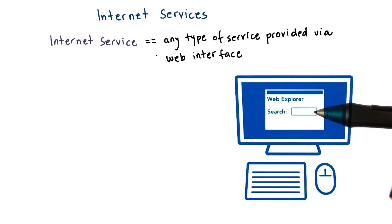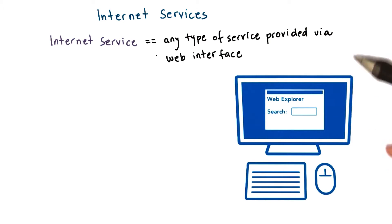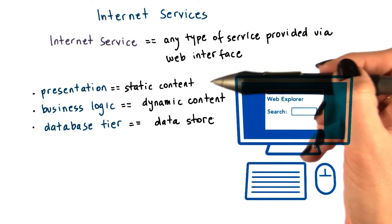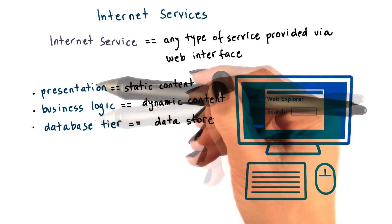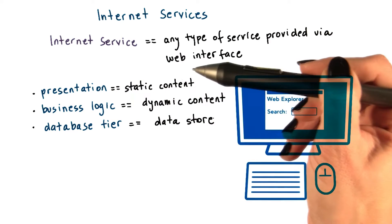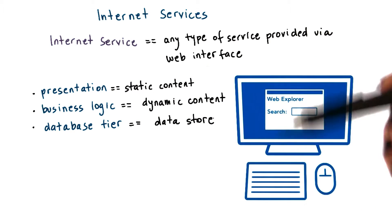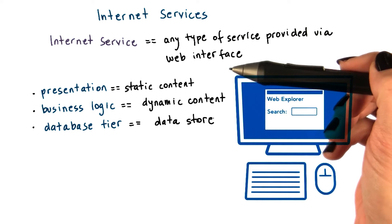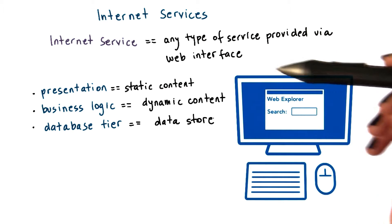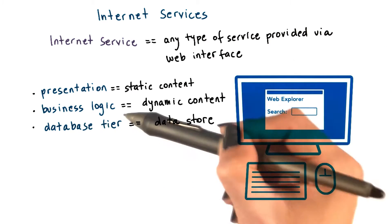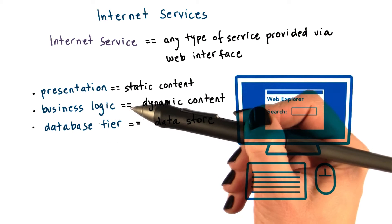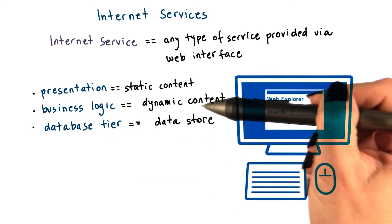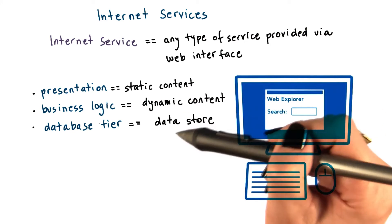The common way in which these services are used is end users send web requests via web browsers and then receive a response. Most commonly, these types of services are decomposed into three components. A presentation component that interfaces with the end users, typically responsible for static content related to the web page layout. A business logic component that integrates all of the business-specific processing — this would be all of the dynamic, user-specific content.